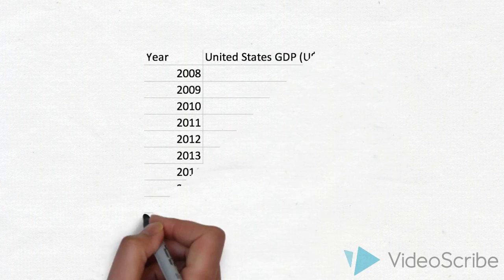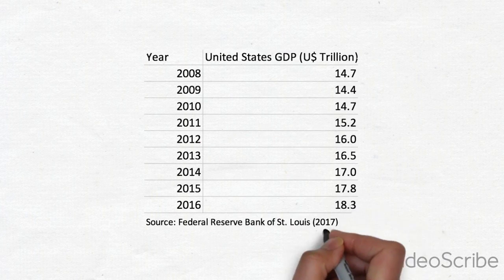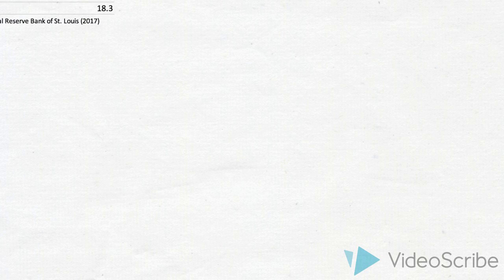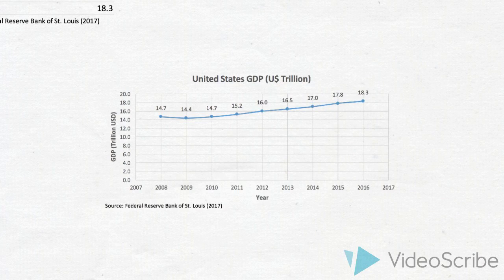An example of time series data would be looking at the yearly GDP of the United States at various times from 2008 to 2016. You compile this information into a line chart, which is useful in forecasting future values.